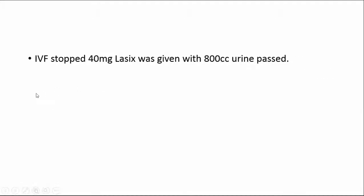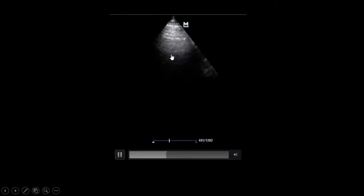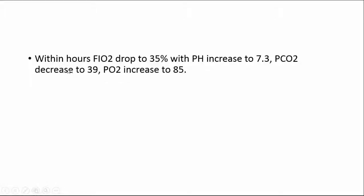IV fluids were stopped and 40mg of furosemide was given. The patient passed 800cc of urine. The upper lobes on lung ultrasound cleared completely within hours — a marvelous response. FiO2 dropped to 35%, pH increased to 7.3, PCO2 dropped to 39, and PO2 increased to 85.